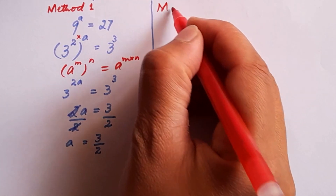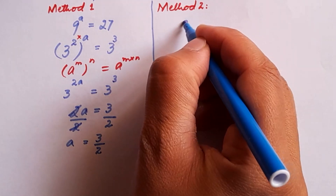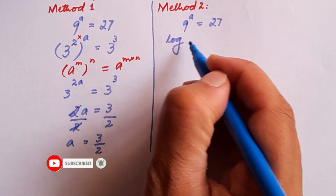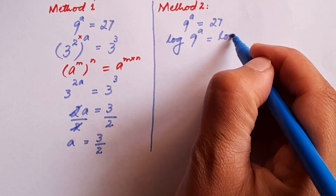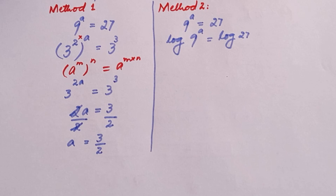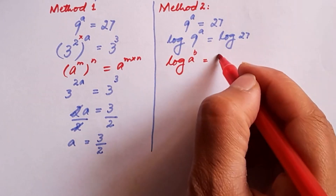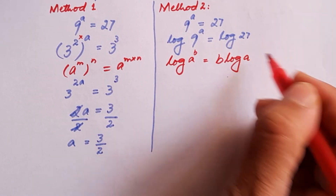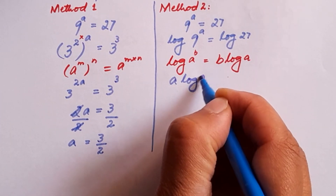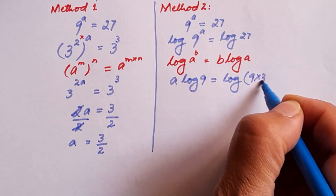Now for method 2. The exponential equation is 9 to the power a is equal to 27. We are going to use the log method — we will take the logarithm on both sides. The log rule to recall is: log of a to the power b equals b times log a. So the left side becomes a log 9, and for log 27 we note that 9 times 3 is 27, so log 27 equals log(9 times 3).